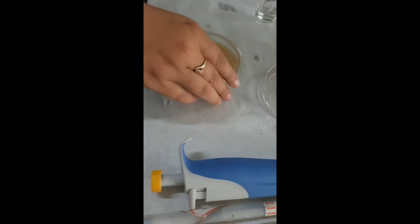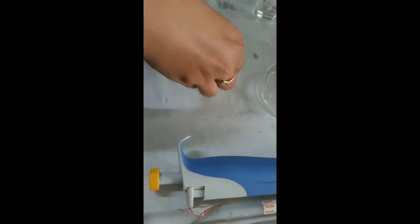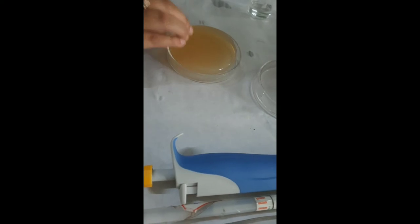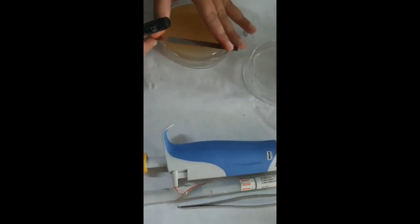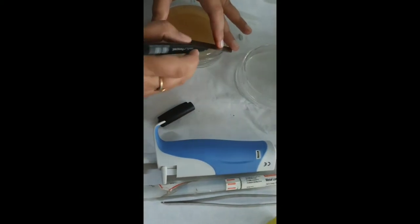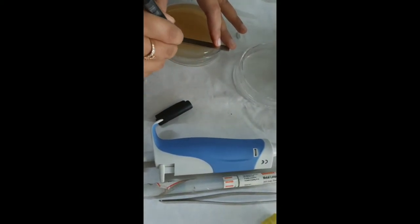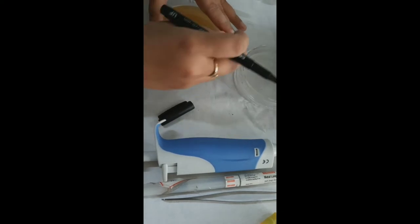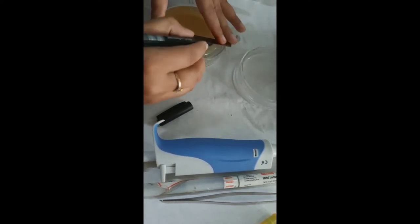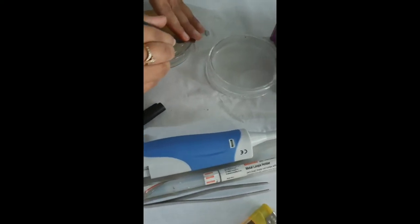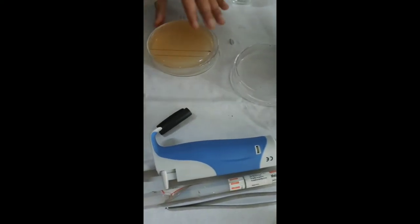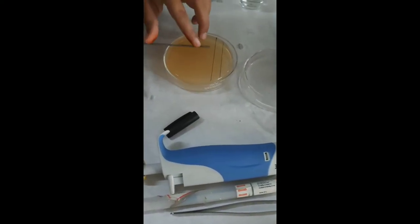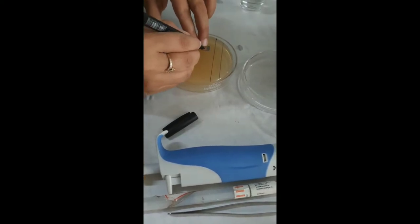First of all, we have to take the agar plate and we have to invert it and mark two parallel lines at the end of the petri plate. Perpendicular to this, we have to draw two lines over here.